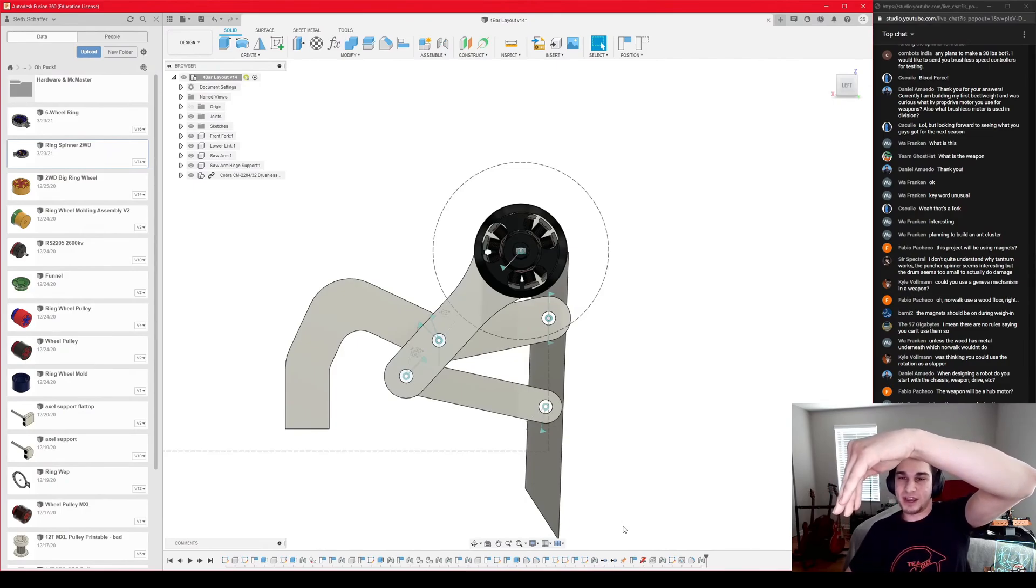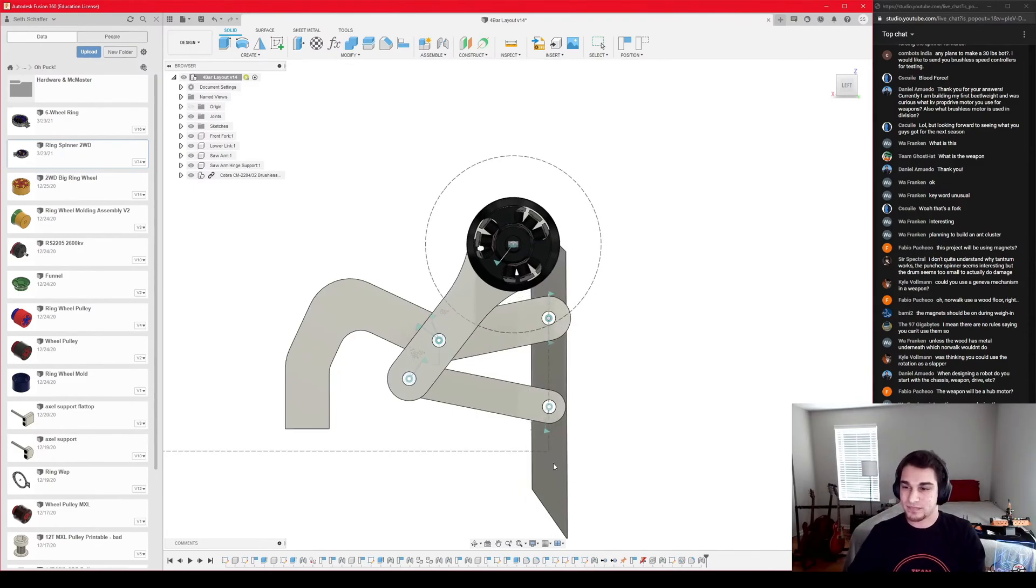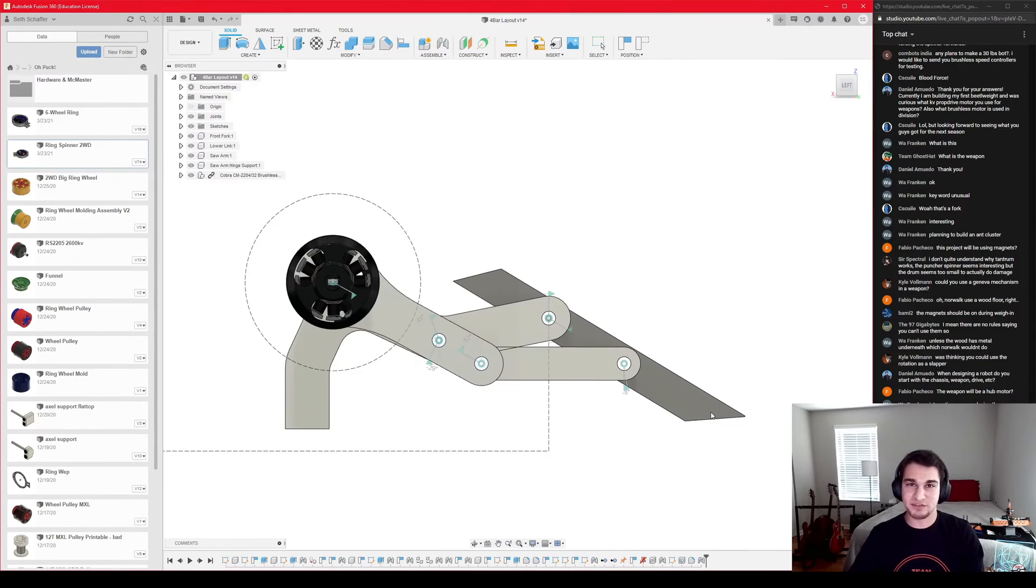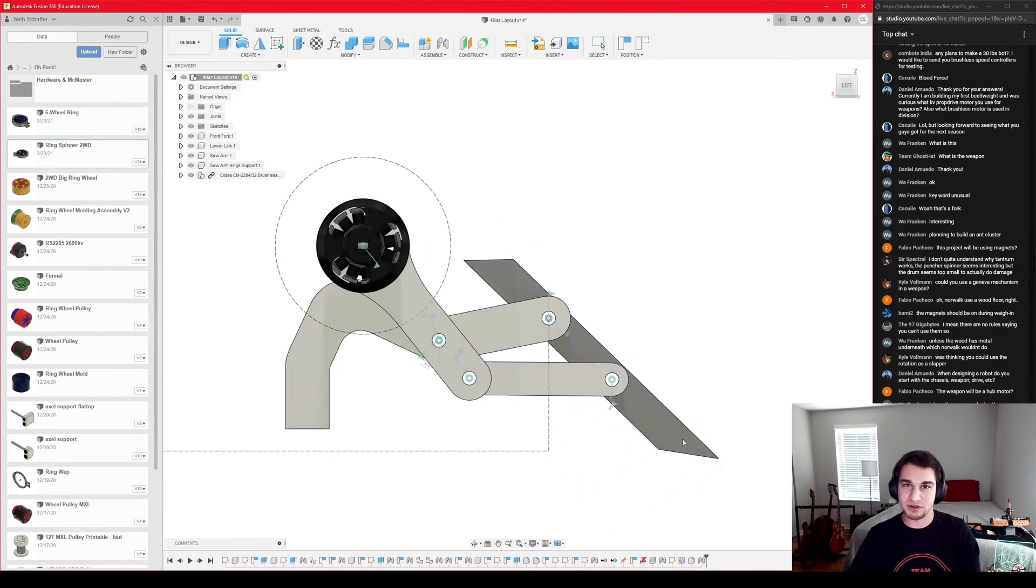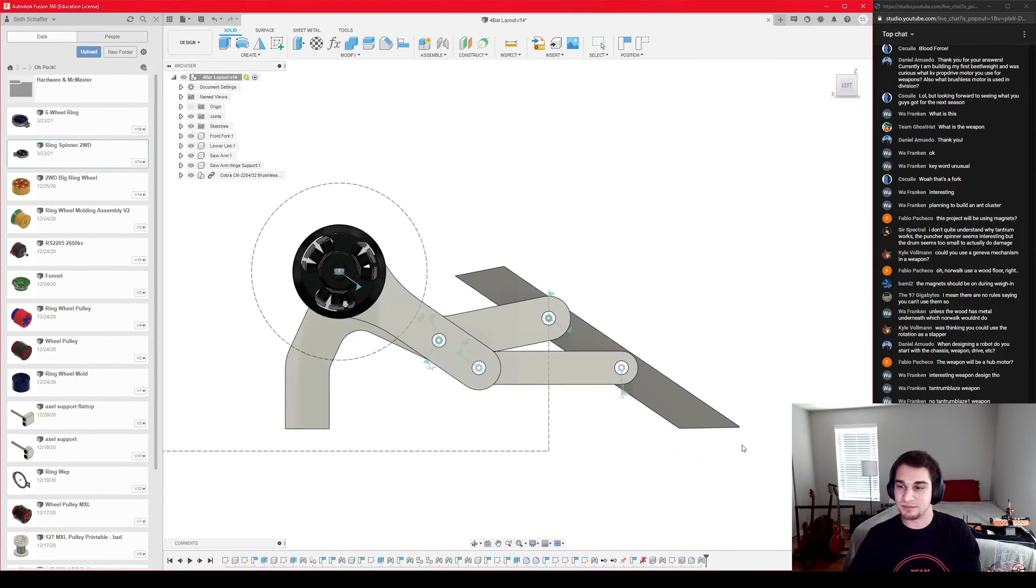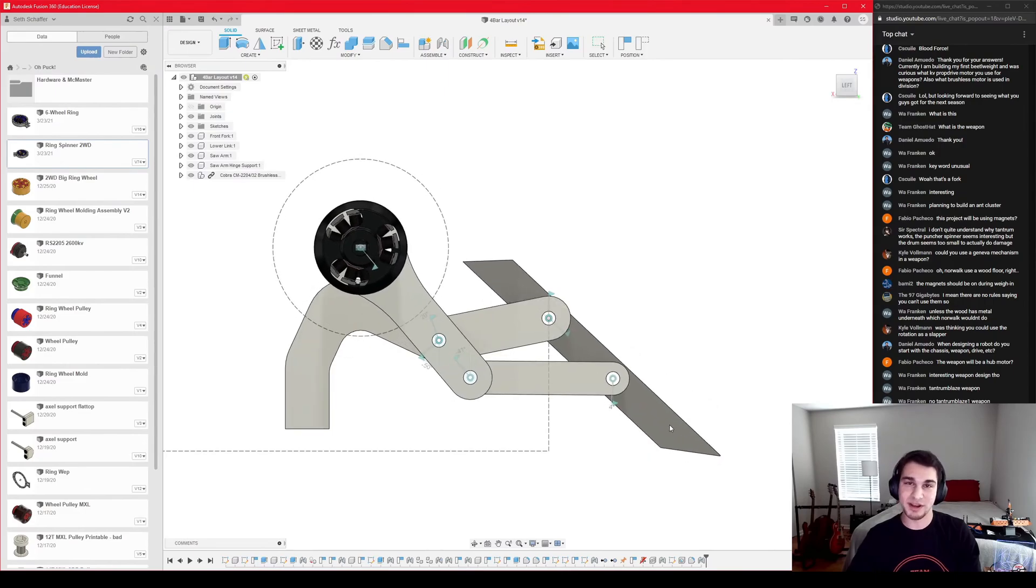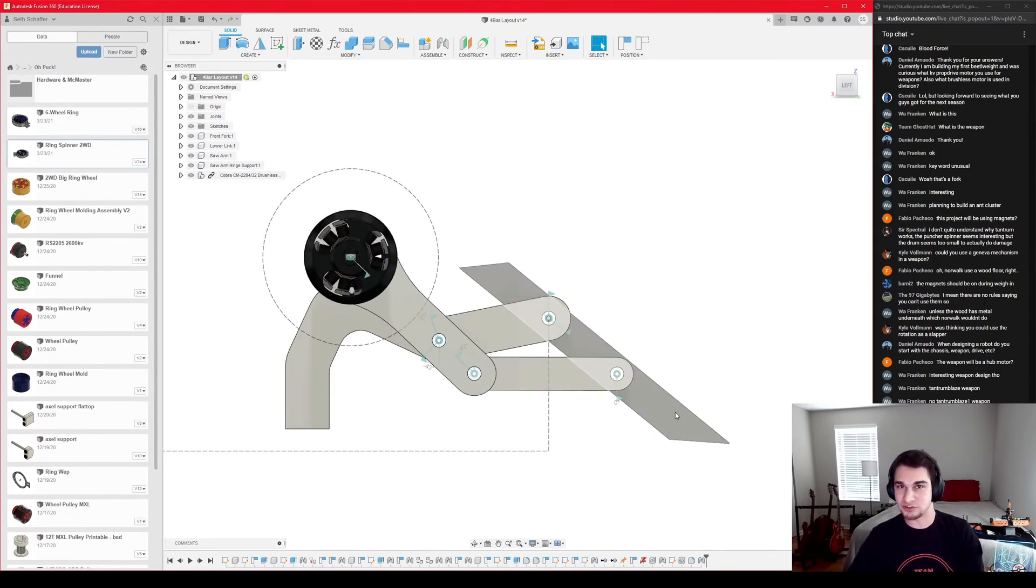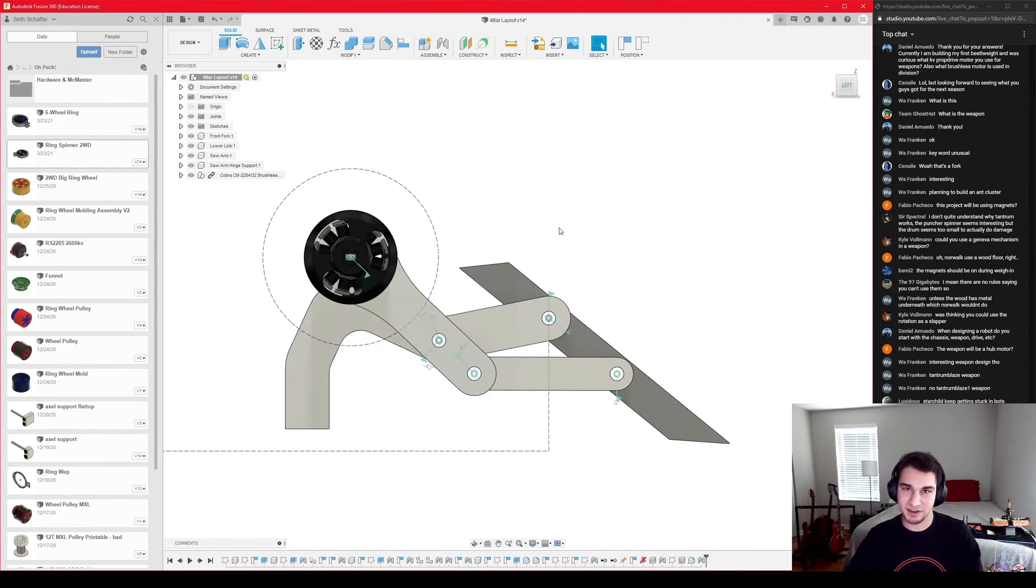So that way I can cut through the bottom of a robot. So that's my idea for defeating most of the meta vertical spinner bots. And I don't know if it'll work at all, but I think it'll be cool to try. And I think I can make this mechanism light enough and durable enough that it in theory can work.